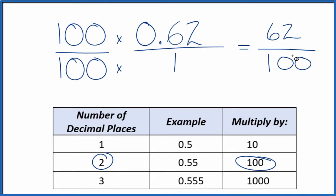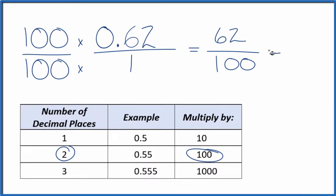Since these are both even numbers, we can simplify this further, though. 62 divided by 2 is 31. And 100 divided by 2, that's 50. So we end up with 31 over 50.